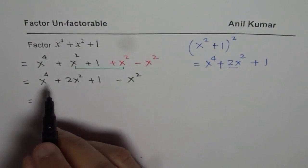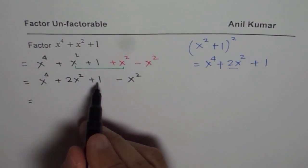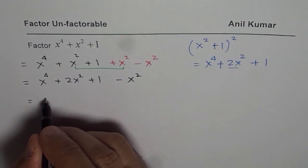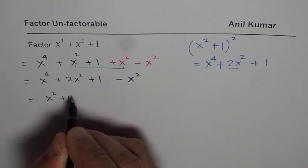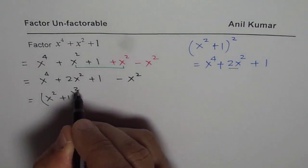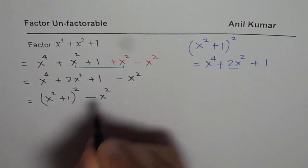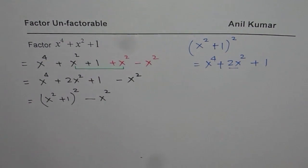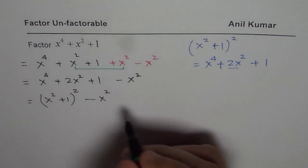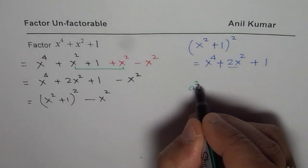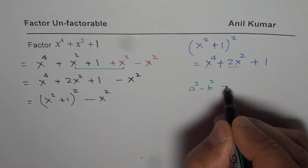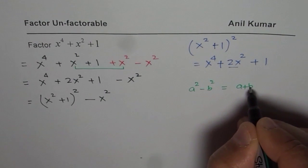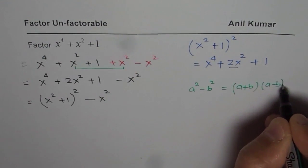As you saw here, x to the power of 4 plus 2x square plus 1 could be written as x square plus 1 whole square, right? And then we have minus x square. At this stage, we can apply difference of squares. You know, a square minus b square is equal to a plus b times a minus b.